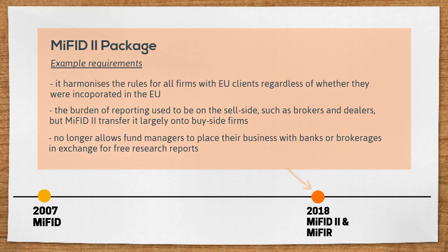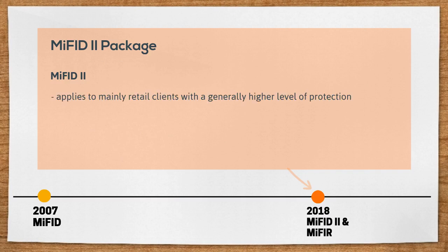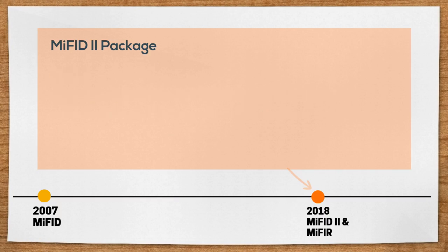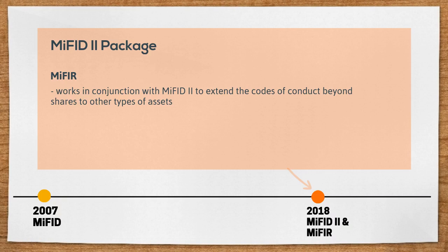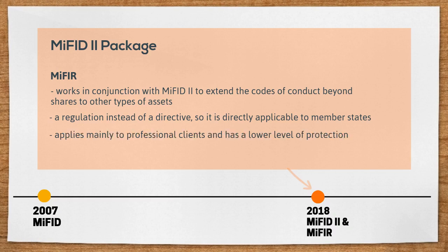Funds with limited research budgets will struggle as they have to either pass the cost onto investors or absorb it themselves. MiFID II applies mainly to retail clients with a generally high level of protection. It is a directive that needs to be transposed into the national law of member states. MiFIR works in conjunction with MiFID II to extend the codes of conduct beyond shares to other types of assets, including contract-based assets and structured finance products. It is a regulation rather than a directive, so it is directly applicable to member states, and it applies mainly to professional clients with a lower level of protection.